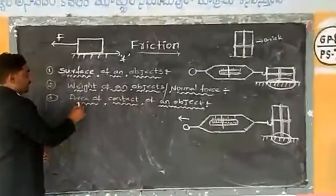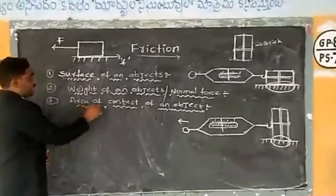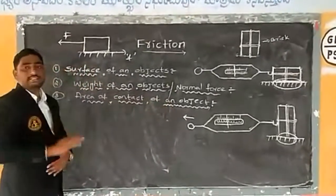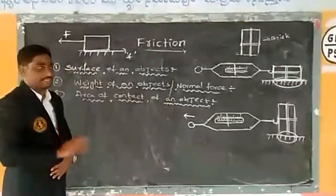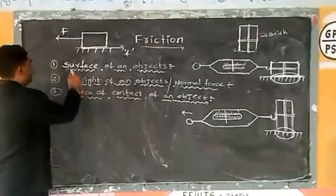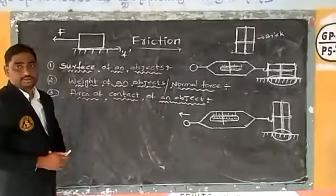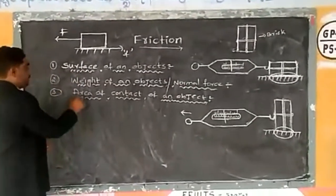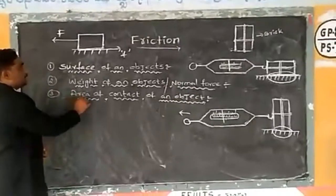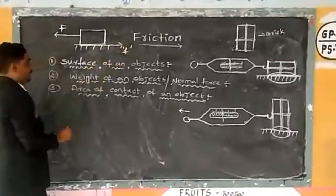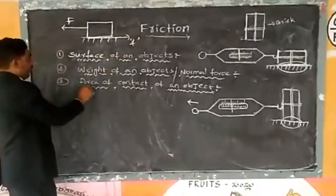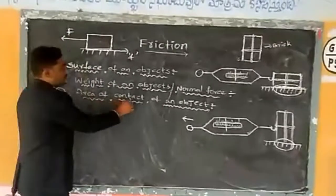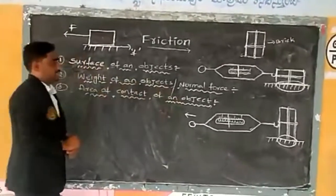How does the area of contact of an object affect friction? I did not explain this in my previous class. I explained the first two factors. So let me explain today how the rate of friction is independent of the area of contact of an object.